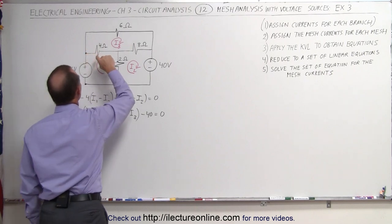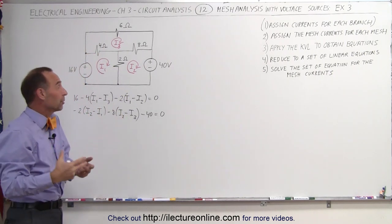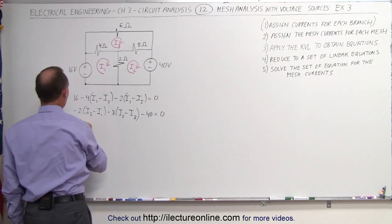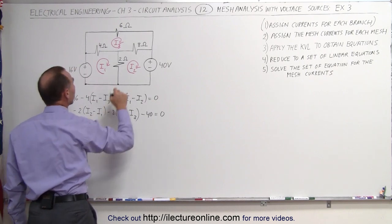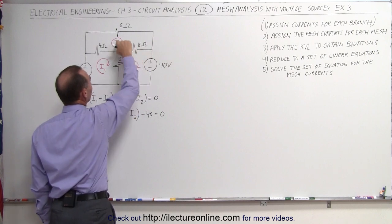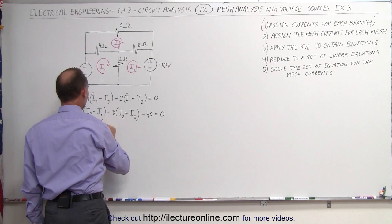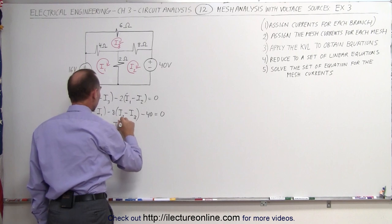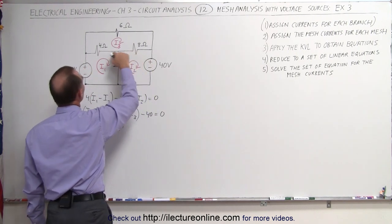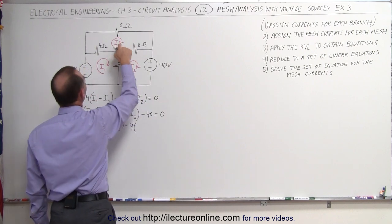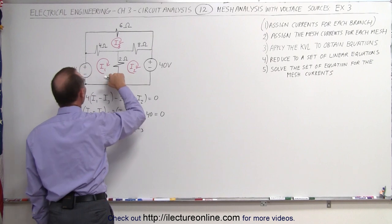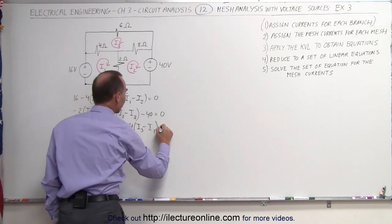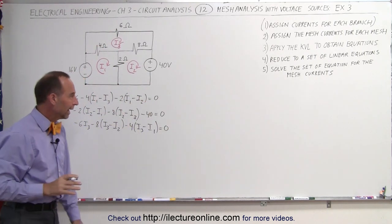Third equation. Let's start from this point right here — it doesn't really matter what point, you can grab any arbitrary point, it'll never make any difference. Coming around the corner across the 6-ohm resistor, there's only one current there: minus 6 times I3. Come around the corner — there's an 8-ohm resistor, we have a voltage drop relative to I3: minus 8 times I3. But I2 is in the opposite direction, that's a voltage rise — minus I2, and this minus times minus makes that a plus. Coming across the 4-ohm resistor, that's minus 4 times I3. But we have I1 in the opposite direction, that's a voltage rise — we subtract I1, and minus times minus makes that a plus. All the way around adds up to zero.